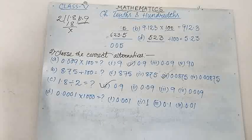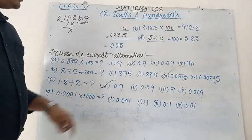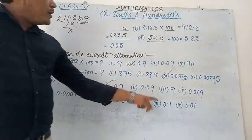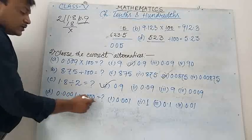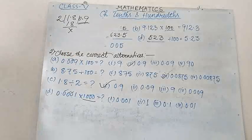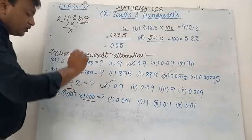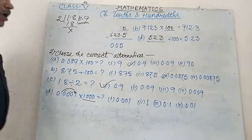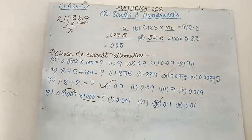Number D: 0.0001 multiplied by 1000 equals to what? Options: 0.001, 1, 0.1, 0.01. Multiplied by 1000 means the point will shift 3 digits to the right. So the answer will be 0.1. Option 3 is the correct answer.